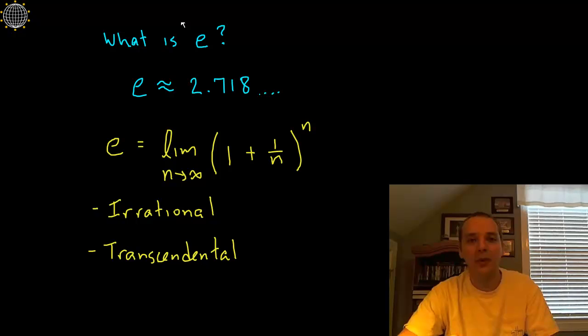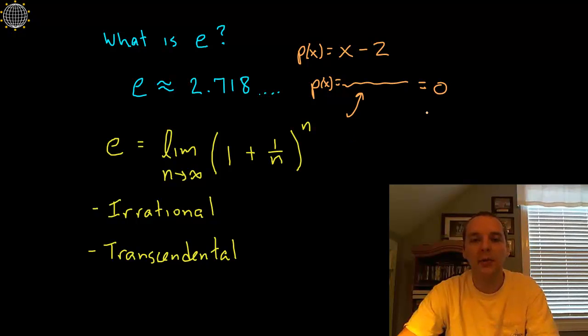A much more difficult property to prove—this was an amazingly difficult proof—e is what is called a transcendental number. A quick crash course: a number is transcendental if you can't write a polynomial where it would be the root of it with rational coefficients. For instance, the number 2 is not transcendental. Why? Because if you made up the polynomial x minus 2, it would be a root of that polynomial because if you plug in 2 you get 0.